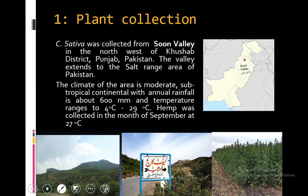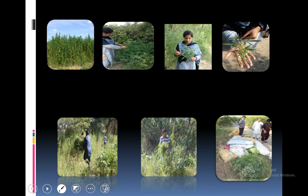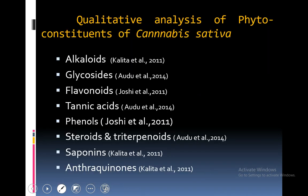Plant collection was done from Sunskeser Valley in the north-west of Kushab district, Punjab. The climate of this area was very suitable for the growth of this plant. Hemp was collected in the month of September at 27°C. Qualitative analysis included isolation of alkaloids, glycosides, flavonoids, tannic acids, phenols, steroids and triterpenoids, saponins and anthraquinones.